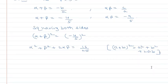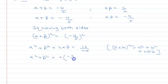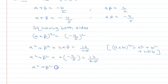I already have the value alpha into beta as minus 9 upon 5. So substituting: alpha squared plus beta squared plus 2 into minus 9 upon 5 equals 16 upon 25. Therefore alpha squared plus beta squared equals 16 upon 25 plus 18 upon 5.